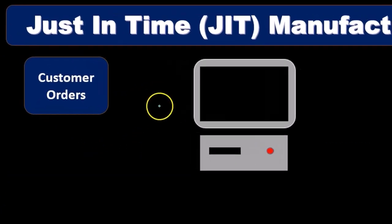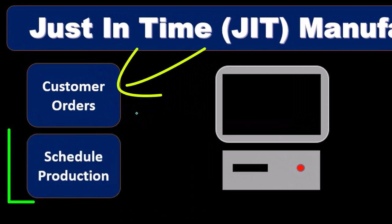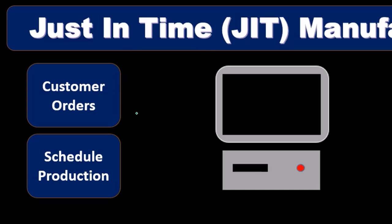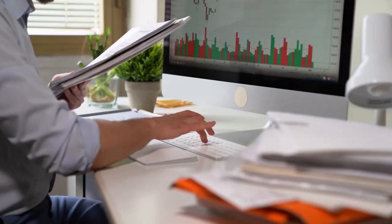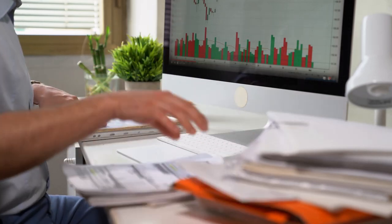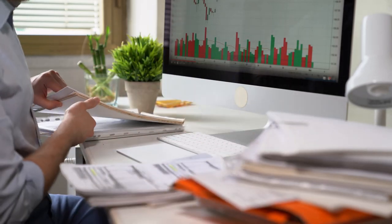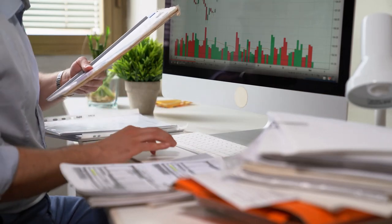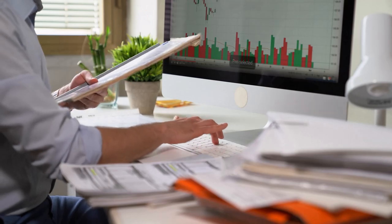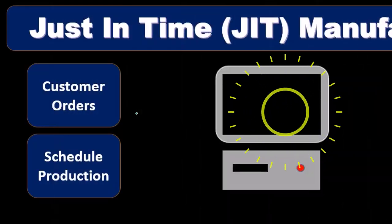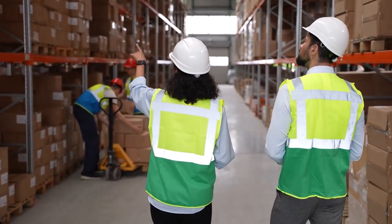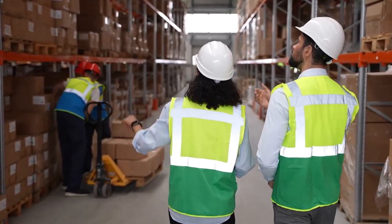The concept is we're going to get the customer order and then schedule production at that point in time. This has to happen pretty quickly because we want to get the computer out quickly, so all these components of production will have to happen smoothly — and that's going to be one of the downfalls. If there are any problems with any of these processes along the way, we don't have any warehouse inventory to just go and pick up a computer. So that's going to be one of the risks.